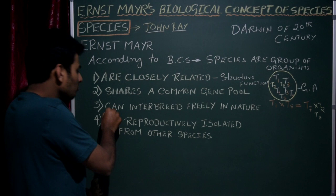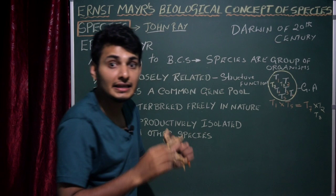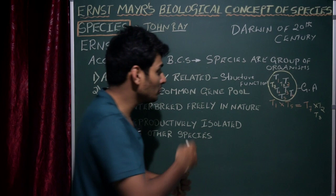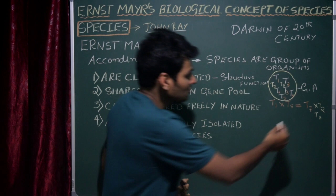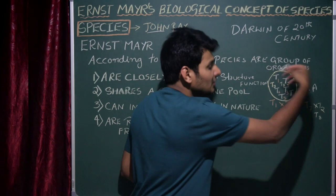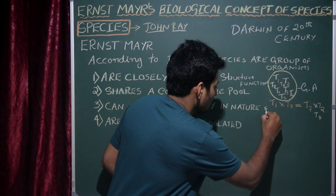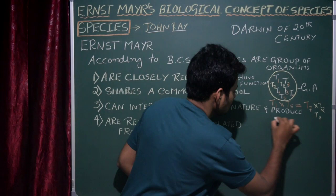The third theory of BCS: species can interbreed freely in nature — in their natural habitat — and produce offspring. Those offspring must be fertile, meaning they have the ability to reproduce. So T7 mates with another tiger to produce T8, and so on. The key point is: they produce fertile offspring.